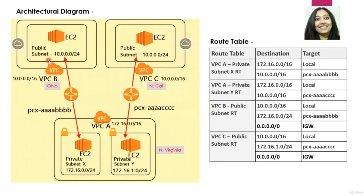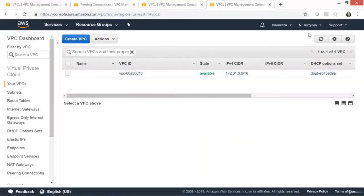If these VPCs are truly peered, we should be able to communicate with our EC2 instance in the private subnet via our EC2 instance in the public subnet. All EC2 instances will be Linux instances, but you could use any type you like. Let's get started with this demo.